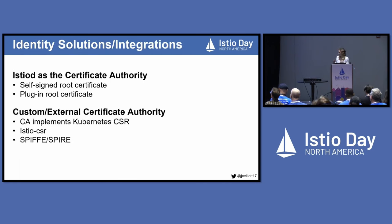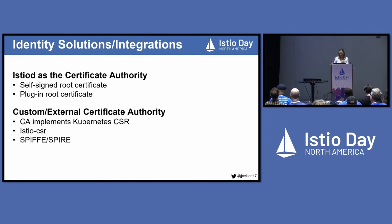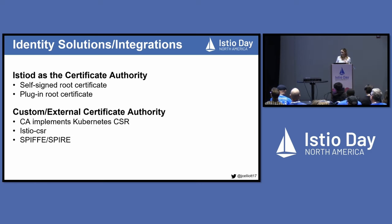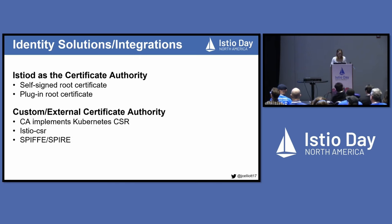I've grouped the solutions into two categories. The first is where Istio-D is in some way issuing certificates — either functioning as the root certificate authority or an intermediate CA — by either generating a self-signed root certificate or the user has brought their own intermediate or root certificate for Istio-D to use. The second set is where you're bringing your own certificate authority, and this is when either your CA implements the Kubernetes CSR API, you're using the Istio CSR agent provided by cert-manager, or you're integrating with SPIFFE or SPIRE.